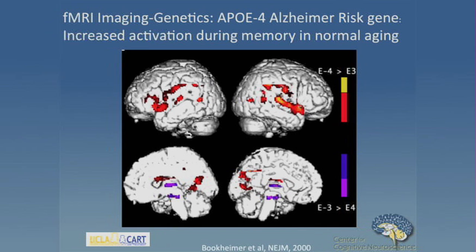As background for imaging genetics, the first fMRI study we did was way back in 2000 in Alzheimer's — this was what motivated the imaging genetics approach we're now using in autism. This was a study in the APOE4 gene for Alzheimer's risk. APOE4 is the most replicated risk gene for a complex disorder, replicated in almost every single sample of Alzheimer's disease risk. There are no other genes like this for Alzheimer's, autism, depression, or schizophrenia — it's a really, really powerful gene.